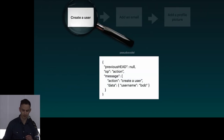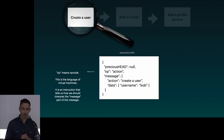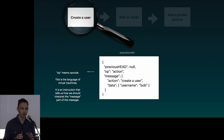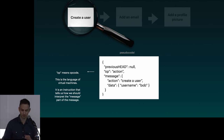Here's our 'create a user' message — this is much closer to what an actual Shelter Protocol message looks like. There's a previous head and there's an 'op,' which means opcode. This is where we get into the virtual machine part of Shelter Protocol. In this case we have an operation called 'action,' meaning this type of event performs an action. The message body says action is 'create a user' and message data is 'user named Bob.'